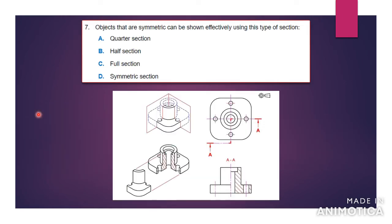Number seven says: objects that are symmetric can be shown effectively using this type of section. If you have a symmetrical object where it's mirrored on both axes — one side is the same as the other — and it's cut down the middle, you can use a half section. Remember it is not a quarter section, it is a half section. If you use the half section and it is symmetrical, the measurements will be the same going around, so each quarter piece that you take out would be a duplicate of the one removed. The answer is a half section.